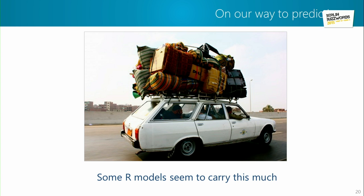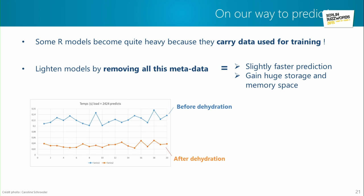On our way to prediction, we realized our serialized model objects were quite heavy — they carry everything needed for training. Since we only wanted to do prediction, we didn't need any of the training data. So we decided to remove all that hidden metadata by iteratively removing data not necessary for prediction.